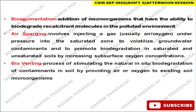Next, there was a question regarding bioaugmentation, air sparging, and bioventing. Bioaugmentation is the addition of microorganisms that have the ability to degrade pollutants in a contaminated environment. Air sparging involves injecting a gas — usually air or oxygen — under pressure into a saturated zone to volatilize groundwater contaminants and promote biodegradation in saturated and unsaturated soil by increasing subsurface oxygen concentration. Bioventing is a process of stimulating natural in-situ biodegradation of contaminants in soil by providing air to the existing soil microorganisms.